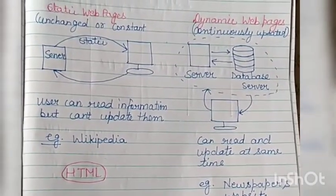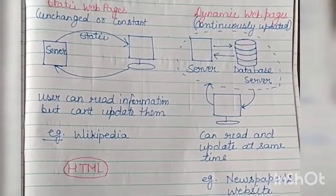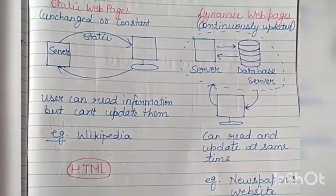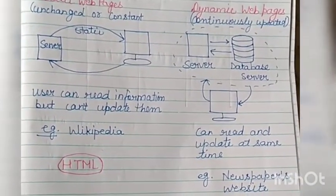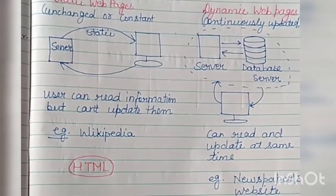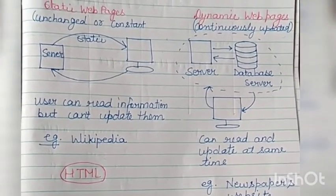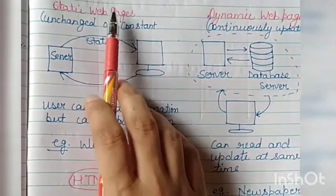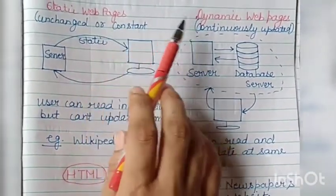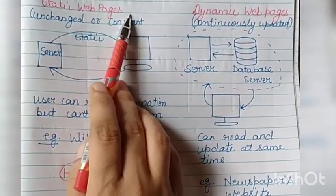Good afternoon everyone. We have completed chapter five and now we are starting chapter six: Cascading Style Sheets, in short we call it CSS. Before starting this chapter, I want to tell you about the difference between web pages. Web pages are of two types: static web pages and dynamic web pages.